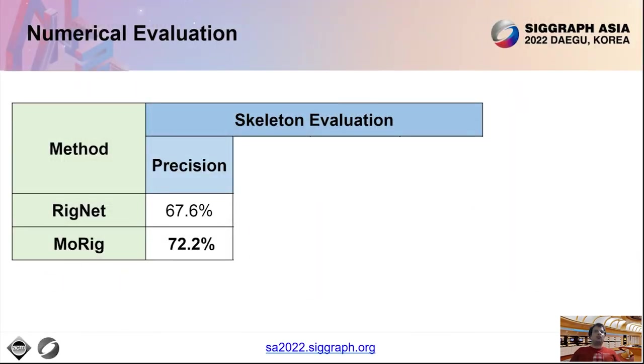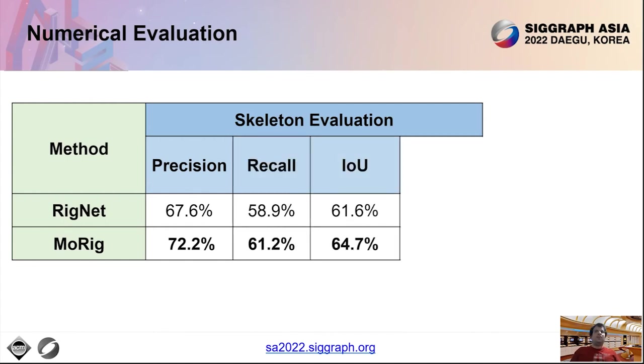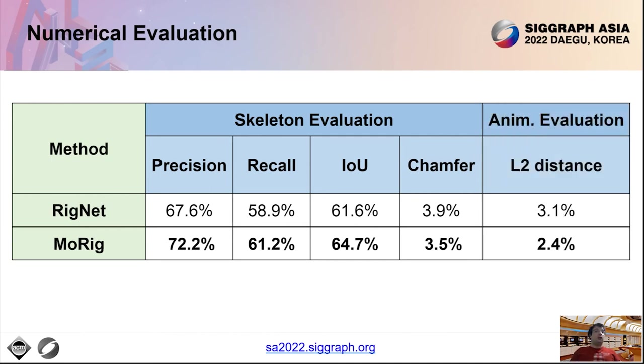Here we show quantitative comparisons for skeleton prediction. We apply the Hungarian algorithm to form a matching between predicted joints from RigNet and ground-truth ones. We do the same for MoRig. The precision, recall, and intersection over union are defined based on the resulting matching. Higher numbers indicate better performance. We also evaluate the chamfer distance between predicted and ground-truth joints. From the table, we can see our method outperforms RigNet according to all measures for skeleton prediction. In terms of animation evaluation, we measure the L2 distance between ground-truth vertex positions and predicted ones averaged over all frames. Our method yields significantly lower error. For more details on evaluation, please see our paper.